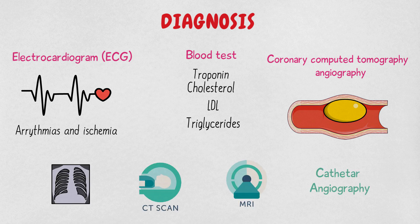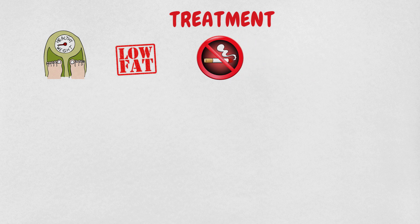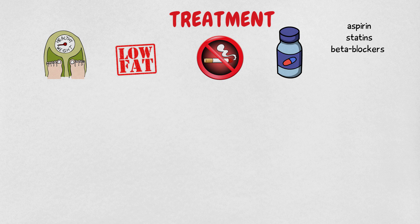Many doctors may recommend certain lifestyle changes, such as maintaining a healthy weight, consuming a balanced diet low in fats, discontinuing the use of tobacco products, and finding ways to reduce stress. Additionally, you may also be treated with medications such as aspirin, statins, beta blockers, calcium channel blockers, or nitrates. Besides this, some surgical procedures may be followed.